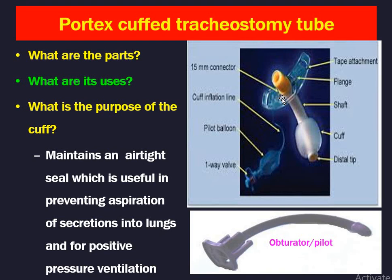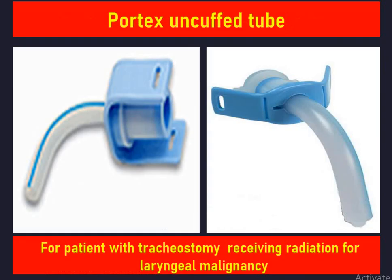Portex is the name of the company and these are basically silicone tubes. The parts are the flange, shaft, cuff, and pilot balloon. Its use is as the first tracheostomy tube during tracheostomy because it has a cuff which decreases the chance of aspiration. It maintains an airtight seal useful for preventing aspiration of secretions into the lungs and for positive pressure ventilation when on a ventilator. It also has an obturator so it can be passed first and then removed once inside the trachea. The Portex uncuffed tube is used for patients with tracheostomy who receive radiation for laryngeal malignancy, because metallic tubes absorb radiation and may cause radiation trauma.